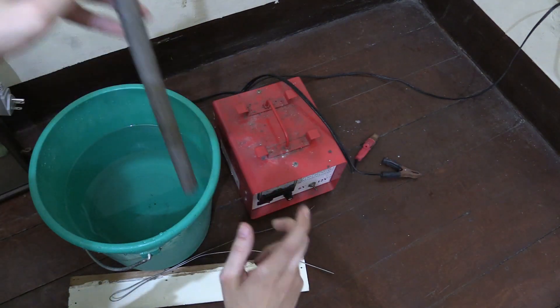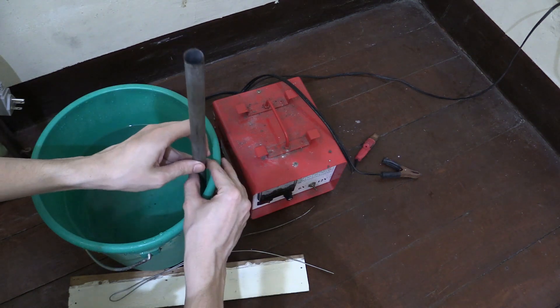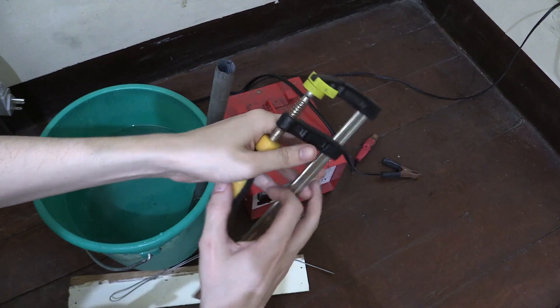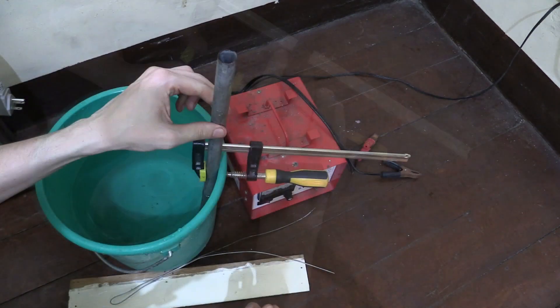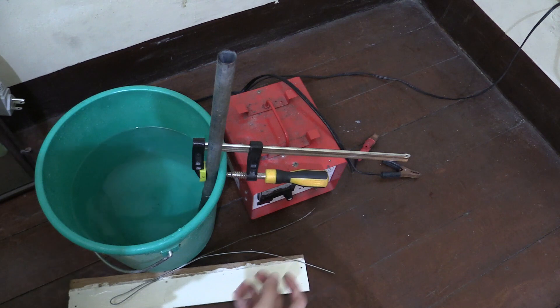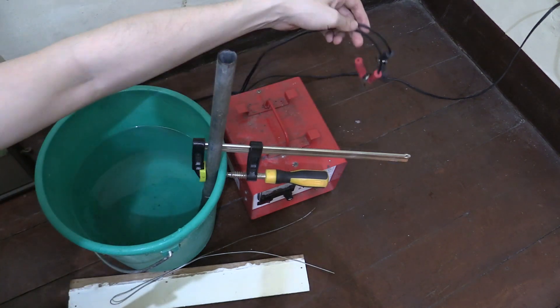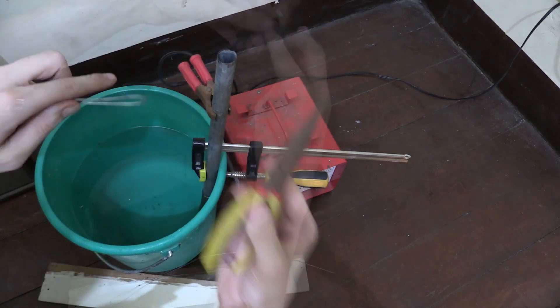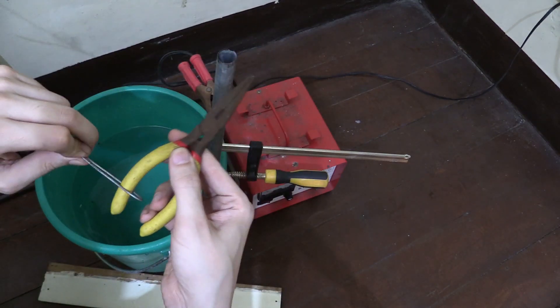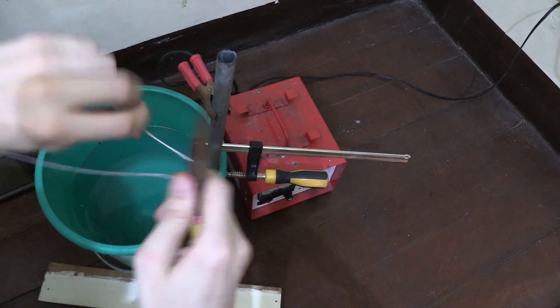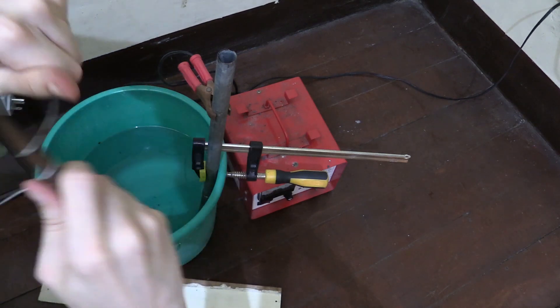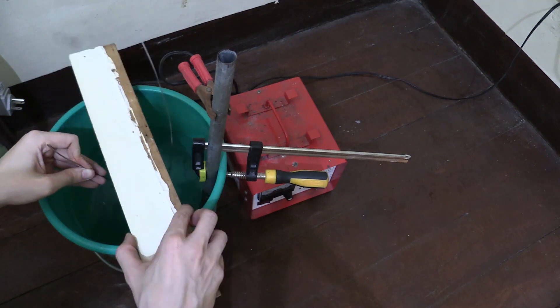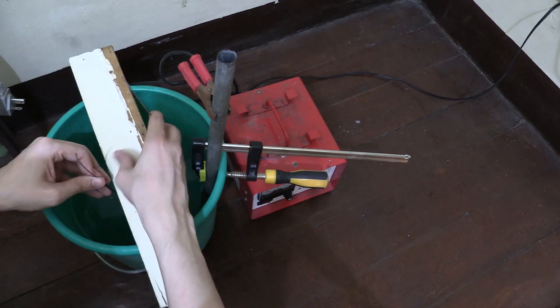The first thing I'm going to do is clamp my anode onto the bucket here. I'm using a big clamp like this, but you can do it any way you want. That's nice and secure. I'm going to connect the positive side from my battery charger - bear in mind it doesn't have power at the moment. Then I'll tie this wire around my tool, put that into the water, and use this wood to hold my tool in place.